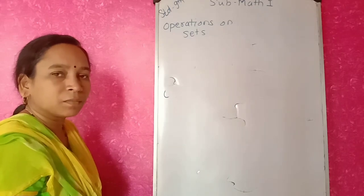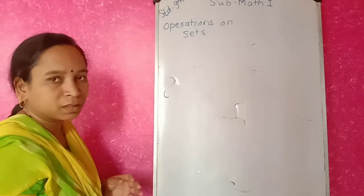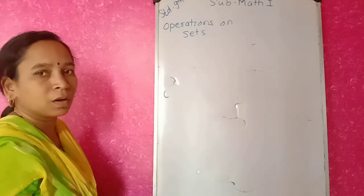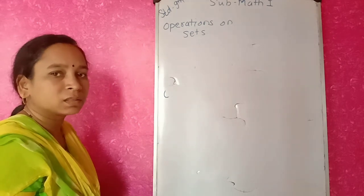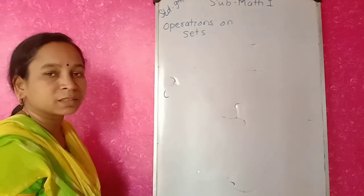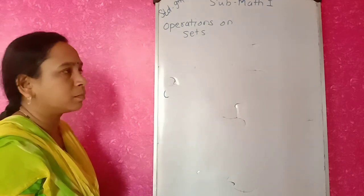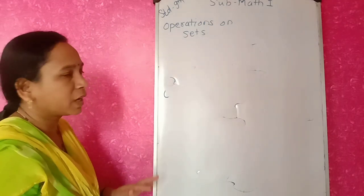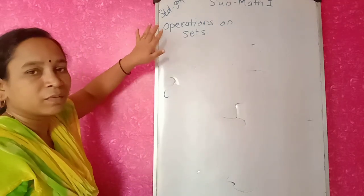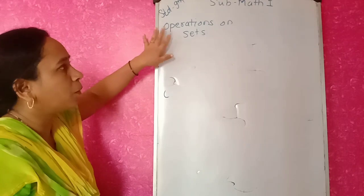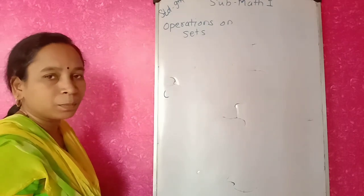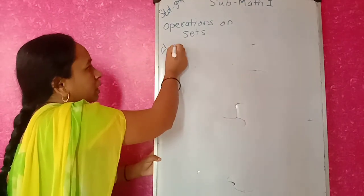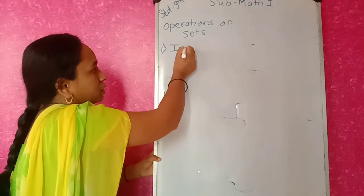Let's start the operations on sets. We know that whenever we study any number system, we have to study the operations on it. Same way in sets also — we have studied how to write sets, how to represent them by Venn diagram, what are the different types of sets. Now the time has come to study the operations on sets. The first operation is the intersection of sets.